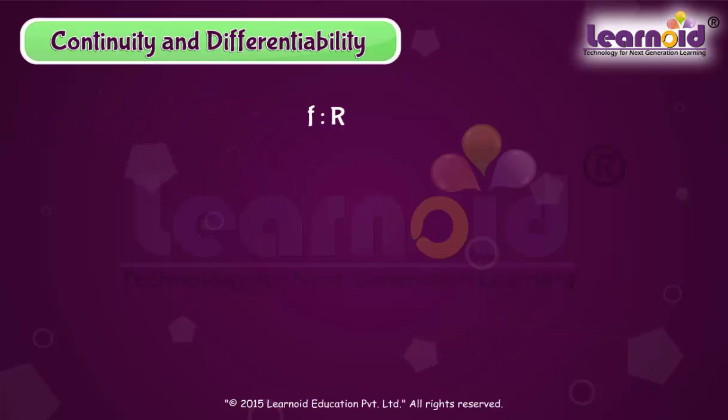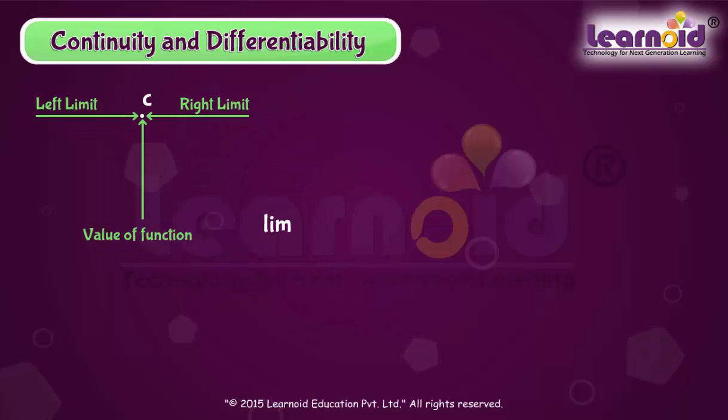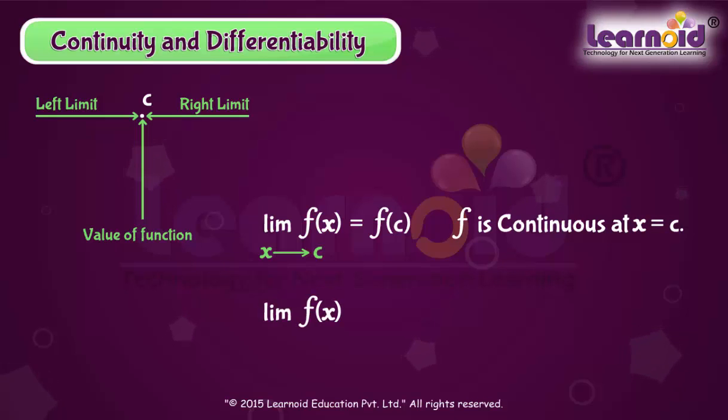Suppose f is a real function on a subset of real numbers and let c be a point in the domain of f. If the left hand limit, right hand limit, and the value of function at x is equal to c exist and are equal, then f is said to be continuous at x is equal to c. The limit of the function at x equals c equals the value of the function at x equals c.